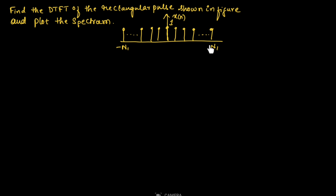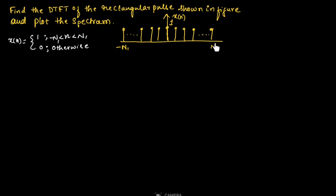From this rectangular pulse we can write x(n) is equal to 1 for n value ranging between minus n1 to n1, and it will be 0 otherwise. So x(n) is 1 for n value ranging from minus n1 to n1; for other values of n, the signal x(n) is 0.